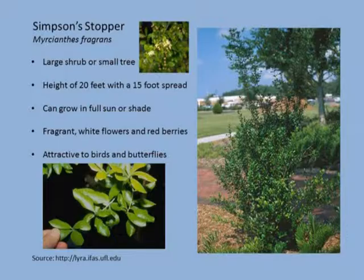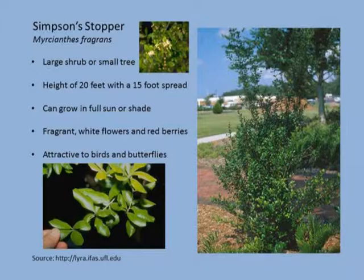Simpson stopper is another hedge that, as with the Walters viburnum, can be pruned or unpruned. This one is very slow-growing, which can be nice — sometimes you don't want a really fast-growing hedge. It forms a nice dense cover so it can be used for screening. It has fragrant flowers and is attractive to birds and butterflies. I've seen these on Hutchinson Island growing for quite some time in maritime hammocks. Simpson stopper, like the pigeon plum, has that peeling multicolored bark and develops a really beautiful trunk after some time.